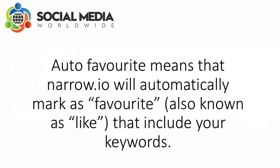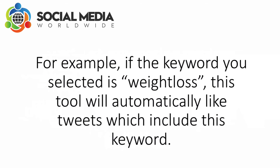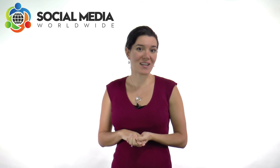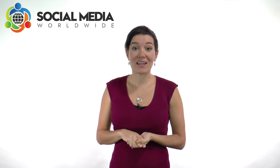Autofavorite means that Narrow.io will automatically mark as favorite — also known as like — tweets that include your keywords. For example, if the keyword you selected is 'weight loss', this tool will automatically like tweets which include this keyword. I personally wouldn't enable this feature, as you can't control what Narrow will mark as favorite and your account can end up liking tweets you wouldn't otherwise approve of.